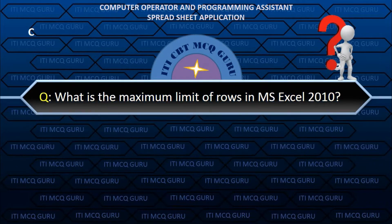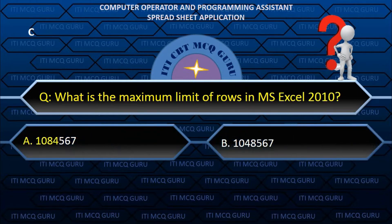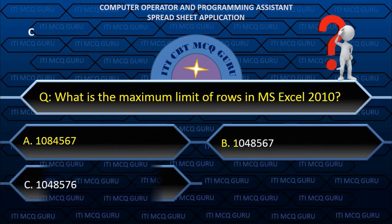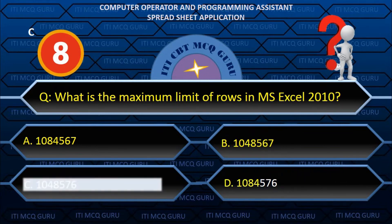What is the maximum limit of rows in MS Excel 2010? See: 1,048,576.